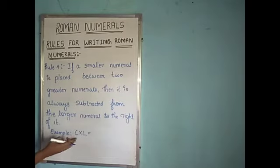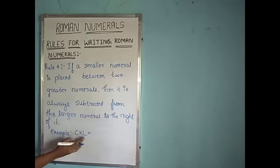For example, here C, X, L. C is a letter of greater value and L is a letter of greater value. And X is a letter of smaller value. So, X is placed between C and L. What do we have to do?